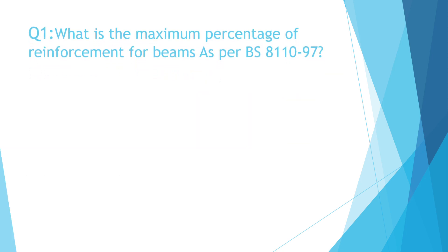Question Number 1: What is the maximum percentage of reinforcement for beams as per PSA11097? A. 1%, B. 2%, C. 3%, D. 4%. The correct answer is D. 4%.